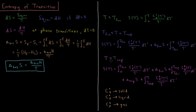And if you're a gas at a temperature greater than the vaporization temperature, the entropy of your system is: the integral from 0 to the melting point of Cp,solid over temperature, plus the entropy change of melting (delta H_fus divided by T_fus), plus the integral from the melting point to the boiling point of Cp,liquid divided by temperature, plus the entropy of vaporization (delta H_vap divided by T_vap), plus the integral from the boiling point up to T of the constant pressure heat capacity of the gas divided by temperature.